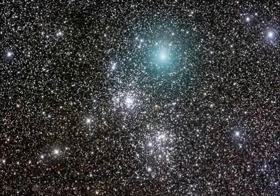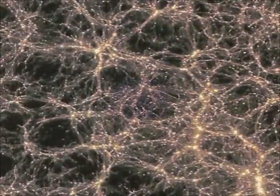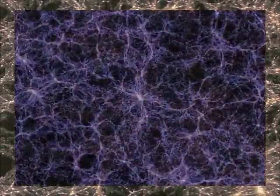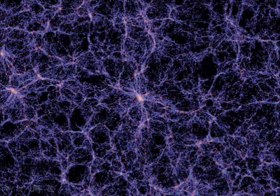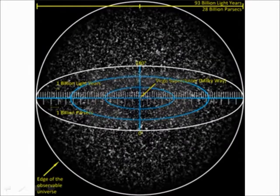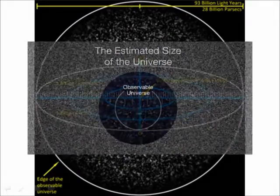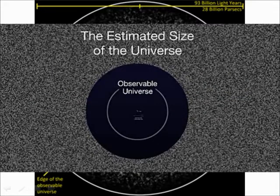The observable universe. The fine grains represent collections of large numbers of super clusters, many galaxies. The diameter of the observable universe is estimated to be about 28 billion parsecs, 93 billion light years.